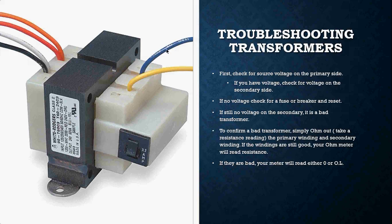On the secondary side, all you have is a blue and a yellow wire — that's your output. When troubleshooting, first make sure you have voltage on the primary side, because we're using the primary side to induce voltage onto the secondary. If nothing is happening on the primary, nothing is going to happen on the secondary. Check for voltage on the primary, then check for voltage on the secondary. If there is no voltage on the secondary side, chances are the transformer is no good — but do a couple more steps before you condemn it.